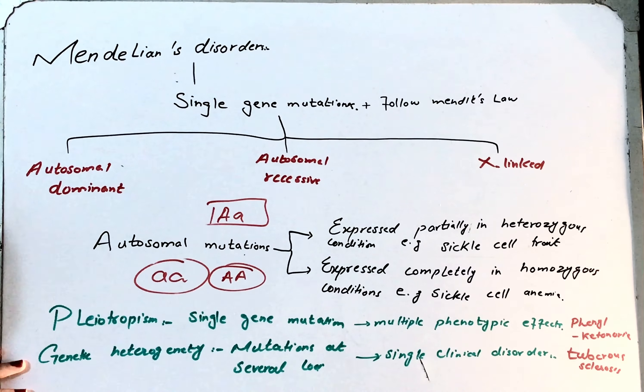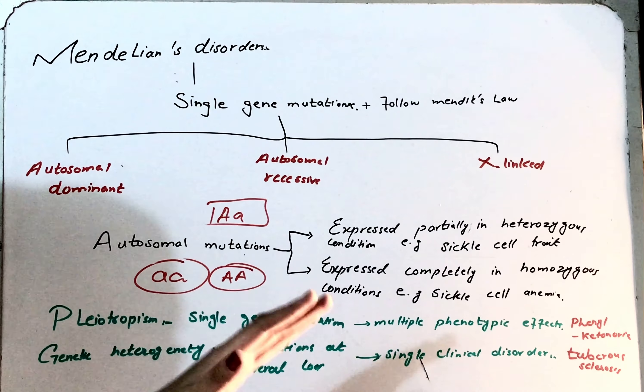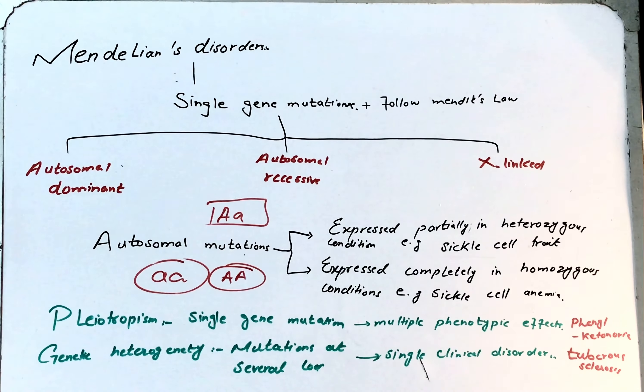An example of genetic heterogeneity is tuberous sclerosis, in which the mutation can be at either chromosome 12 or chromosome 16, or both. Another example of genetic heterogeneity is profound childhood deafness.